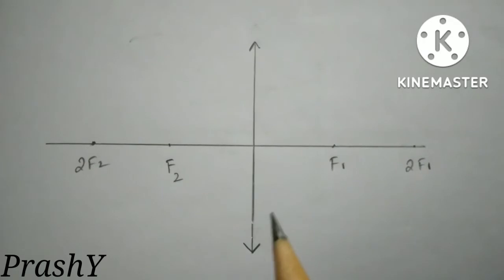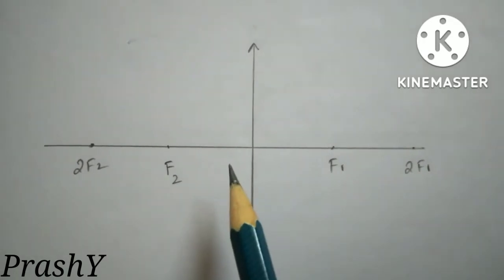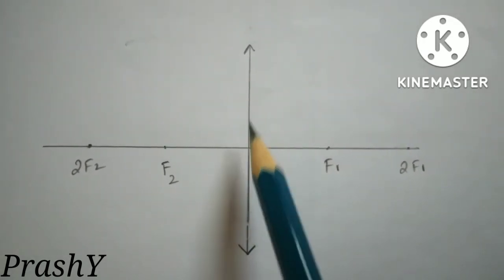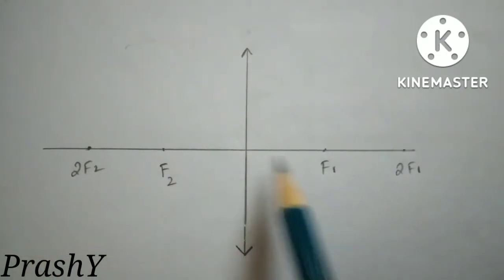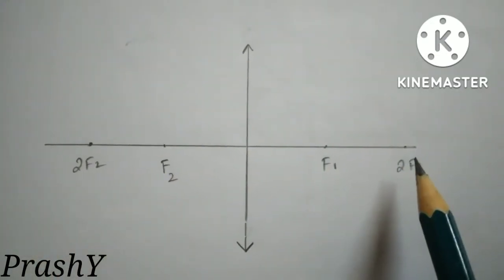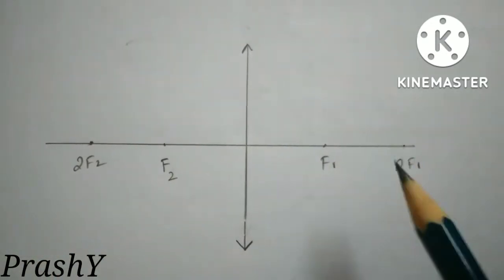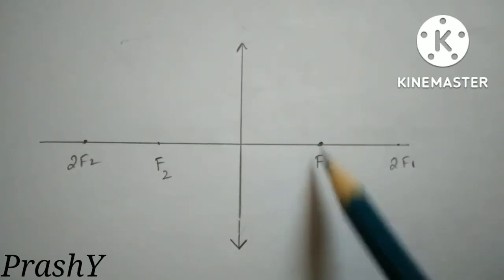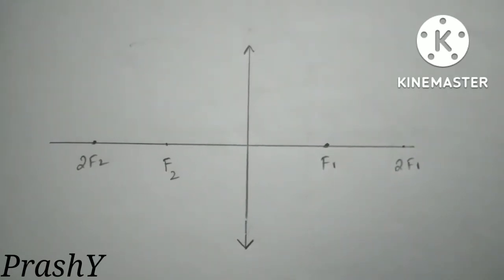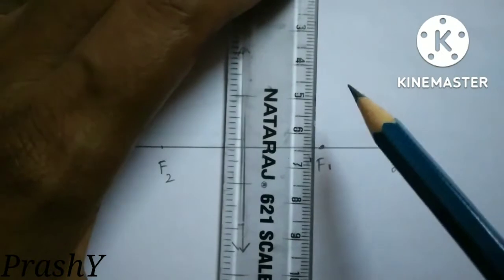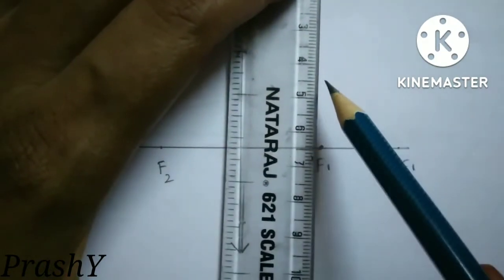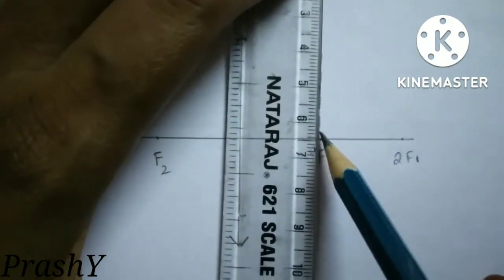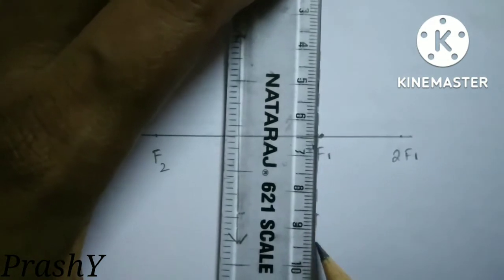Let us learn how to draw this diagram in a simple way. First I am taking a convex lens. This is the convex lens and this is the principal axis. We know that for a convex lens the focus is at F1. So first I have to draw a focal plane perpendicular to the principal axis at the focus.